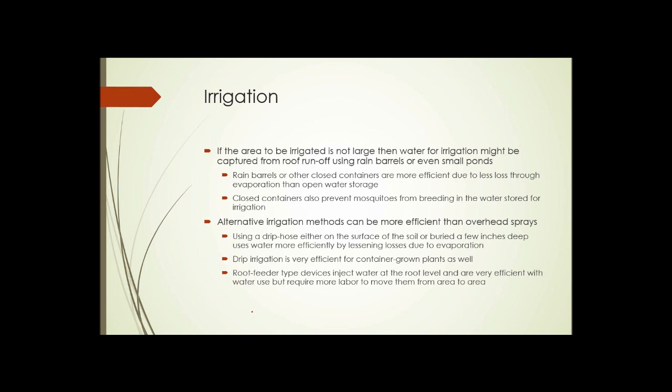Irrigation. If the area to be irrigated isn't large, then water from irrigation might be captured from roof runoff using rain barrels or even small ponds. Rain barrels or other closed containers are more efficient than ponds due to less loss through evaporation than open water storage. Closed containers also prevent mosquitoes from breeding in the water that's being stored for irrigation.